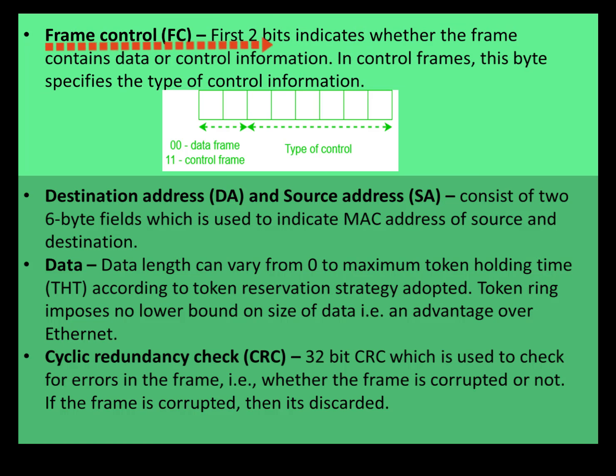Next is Frame Control. In Frame Control, the first two bits indicate whether the frame contains data or control information — it basically indicates which type of frame is arriving. FC is also one byte.